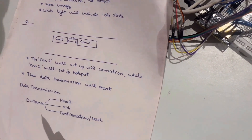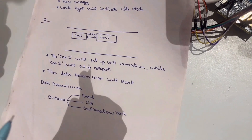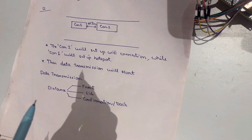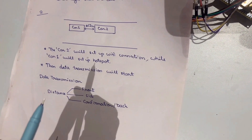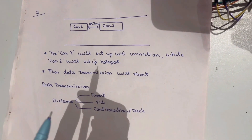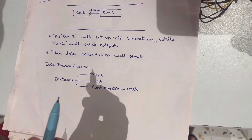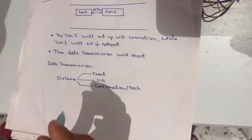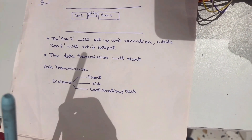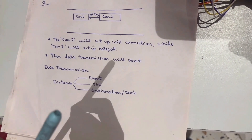For the second case, if the distance between car one and car two is less than two meters, it indicates that it is okay for the connection to take place. So car two and car one will initiate a Wi-Fi protocol and start the communication.